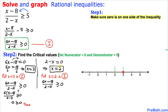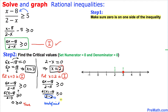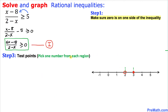Now let's check the next critical point, x equals 2. Substituting into inequality I, the top becomes 6 times 2 minus 18, and the denominator becomes 2 minus 2, which is zero. Whenever we have a zero in the denominator this is undefined. Undefined means this point does not exist, so at x equals 2 we put an open circle.